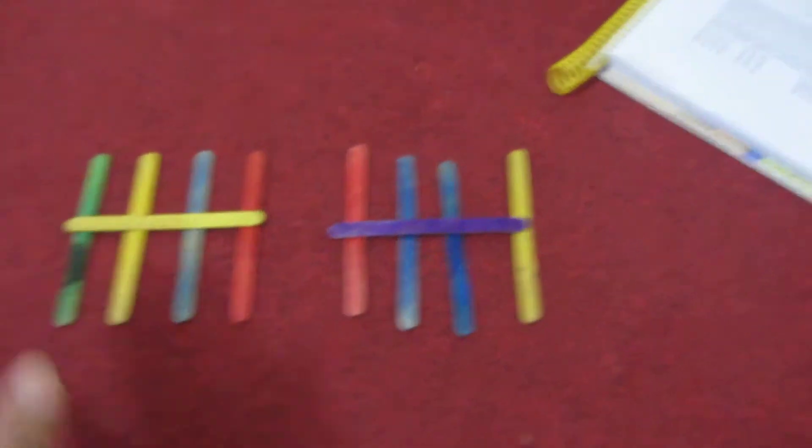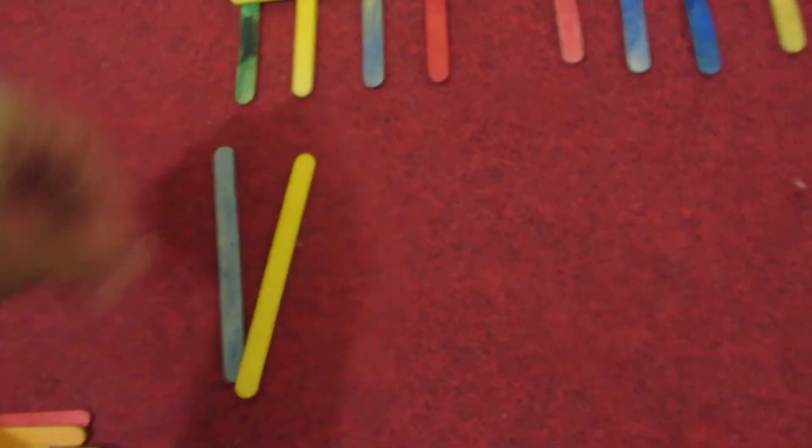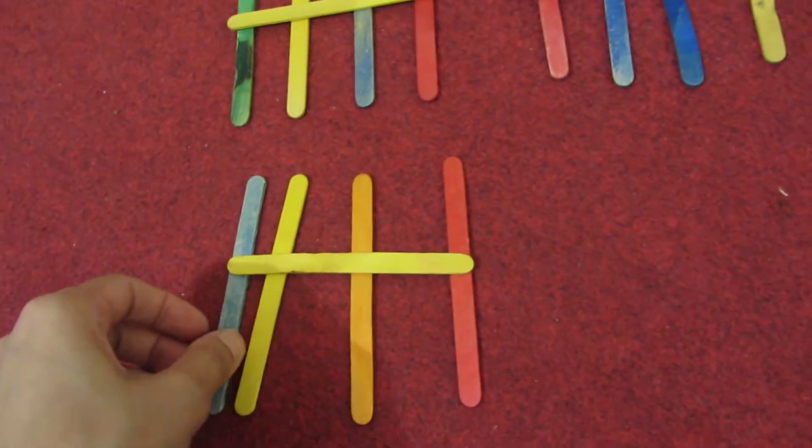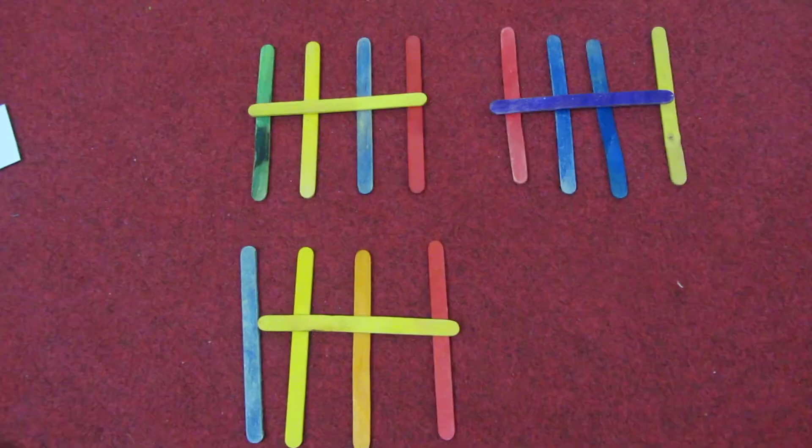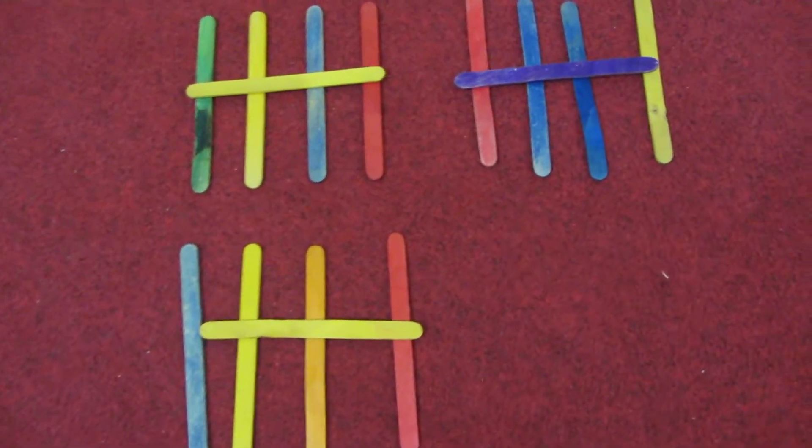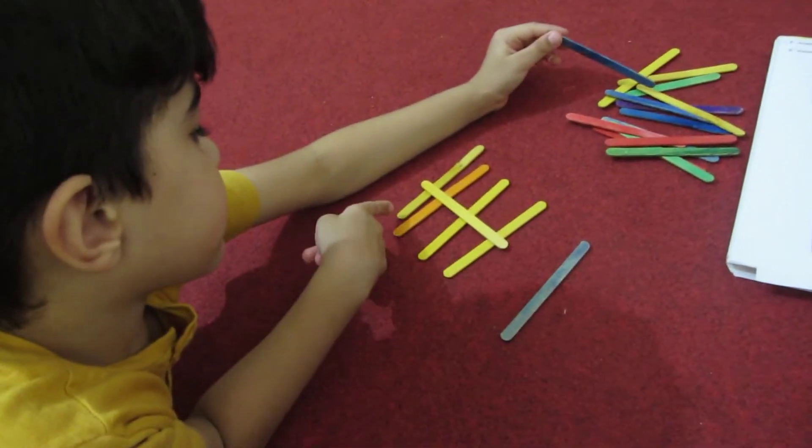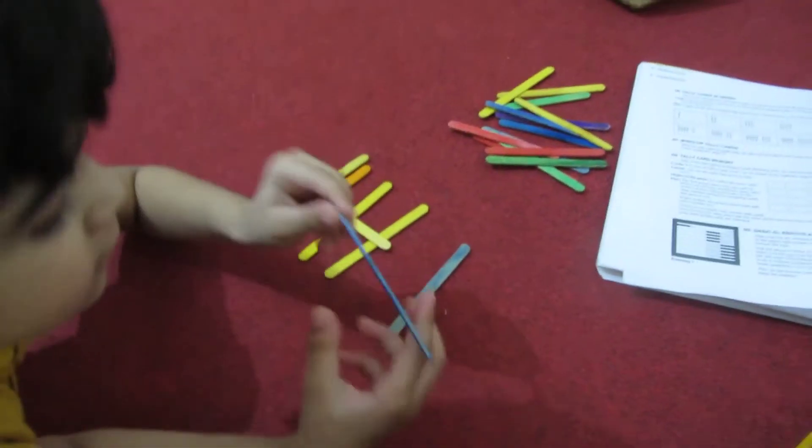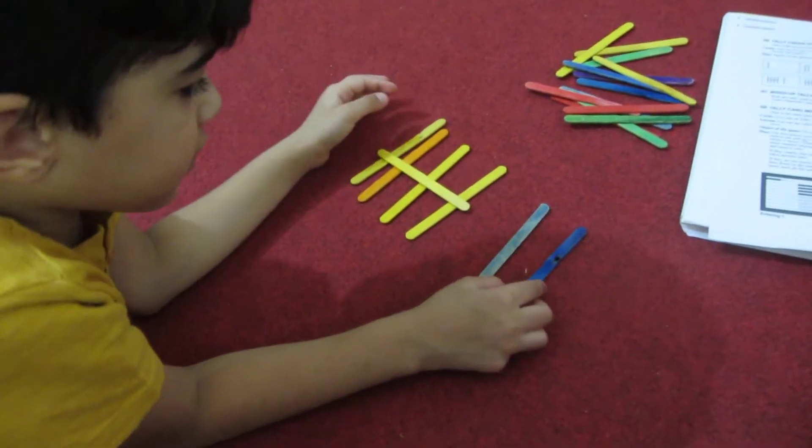So this is our first activity. I asked Yaya to make the number eight, and Yaya is making eight. I didn't tell him anything—he did a lot of activity before.